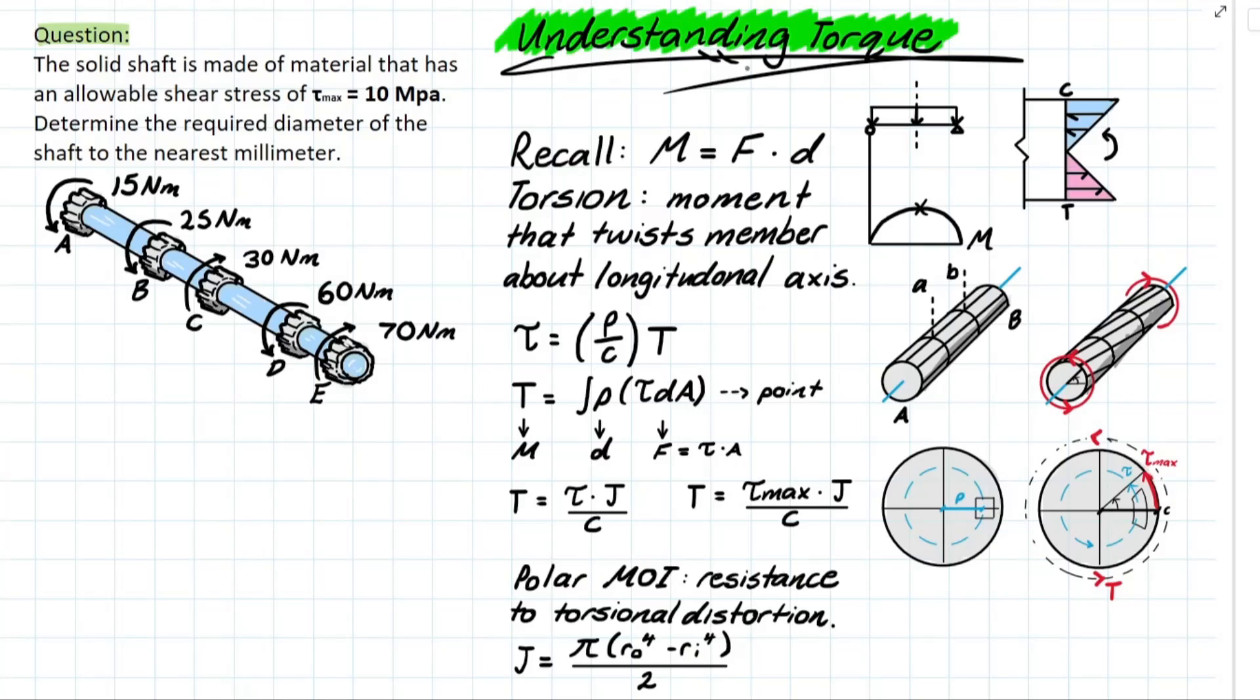From our understanding of moment, we have moment which is equal to force times distance. So we know that the further away you go from this longitudinal axis, the greater your stress is actually going to be. You have your max shear stress developing all the way at the edge of our member, which is at point C. And we're going to have no shear stress developed at the longitudinal axis.